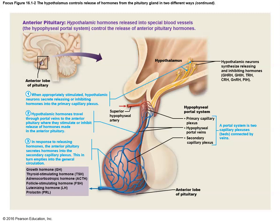The posterior pituitary doesn't make any hormones on its own — it accepts what the hypothalamus made and releases it when told to. The anterior pituitary, however, does make hormones, but takes its orders from the hypothalamus. When the hypothalamus releases stimulatory or inhibitory hormones, that triggers the anterior pituitary to produce growth hormone, thyroid-stimulating hormone, adrenocorticotropic hormone, follicle-stimulating hormone (FSH), luteinizing hormone (LH), and prolactin — with FSH, LH, and prolactin affecting reproductive functionality.